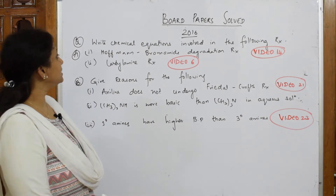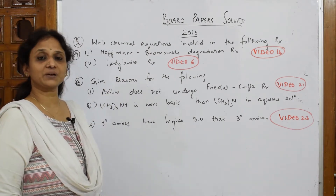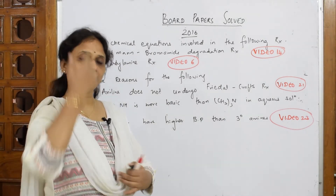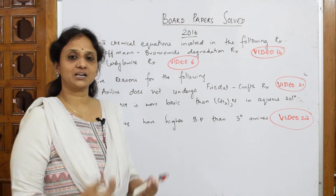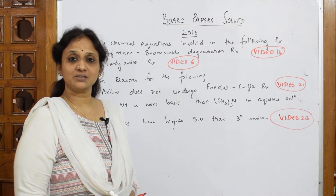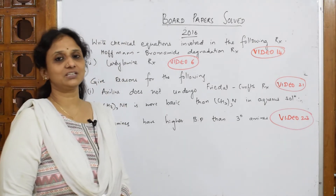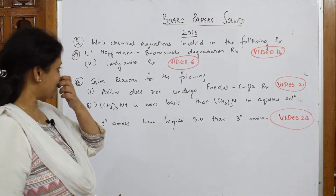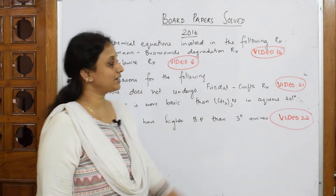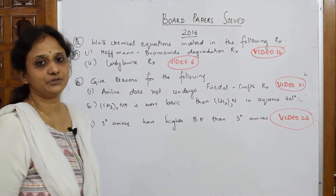Now in the 2016 paper they have given name reactions directly. So you have to practice the name reactions. I have already labeled the name reactions under the playlist — different name reactions: Hoffmann bromamide, carbylamine reaction, Gabriel phthalimide reaction, Sandmeyer's reaction, Gattermann reaction, coupling reaction, diazotization. All these are very important. I have labeled video number 14 for Hoffmann's bromamide with clear explanation.